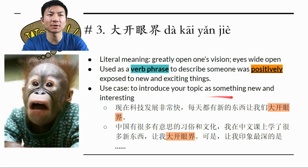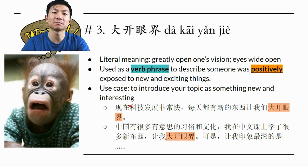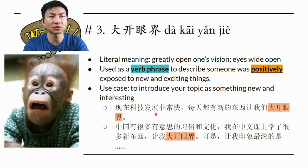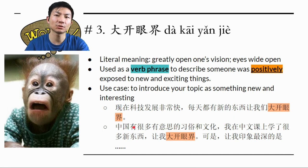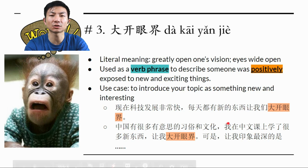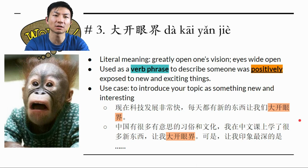The use case is to introduce your topic as something new and interesting — your topic is something emerging that you never knew before, and now that you know it, it makes you 大开眼界. Example: 现在科技发展非常快，每天都有新的东西让我们大开眼界. You can use that to introduce a technology-related culture presentation, followed by: 我觉得 something 是现在最新、最有意思、最有用的一项科技.